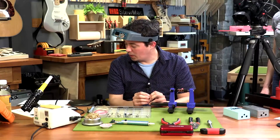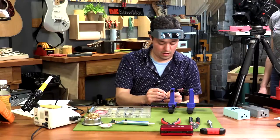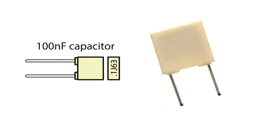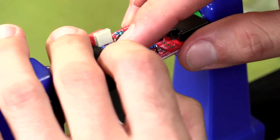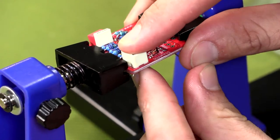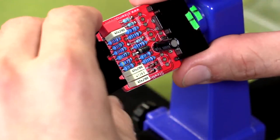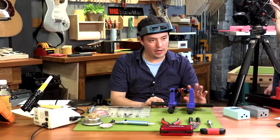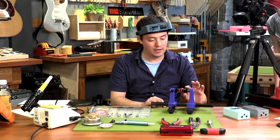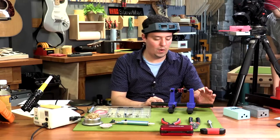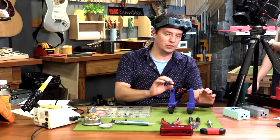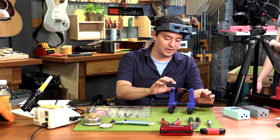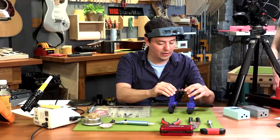For our last cap, we've got a 100 nanofarad that goes in between those two 47 nanofarad caps. These small film caps are not polarized. You can install them in any orientation you want. I like to make sure all the writing is facing the same way to make troubleshooting easier.